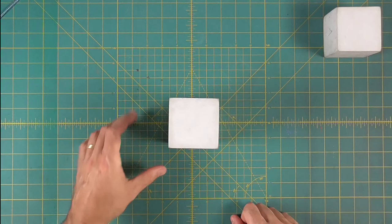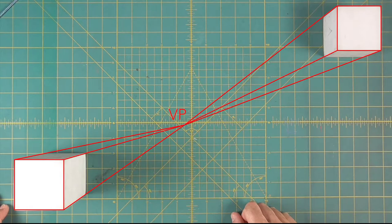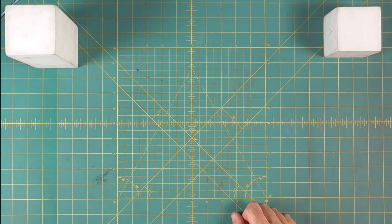Parallel lines in a three-dimensional space appear to converge to a vanishing point on a picture plane.